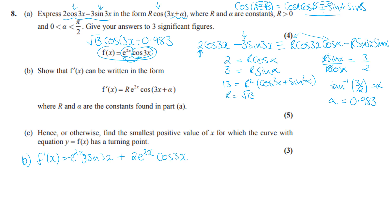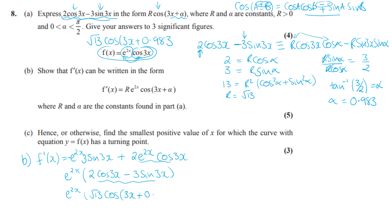Recognising that 2cos(3x) − 3sin(3x) is exactly the expression from part a, we substitute: f′(x) = e^(2x) · √13 · cos(3x + 0.983). That completes part b.